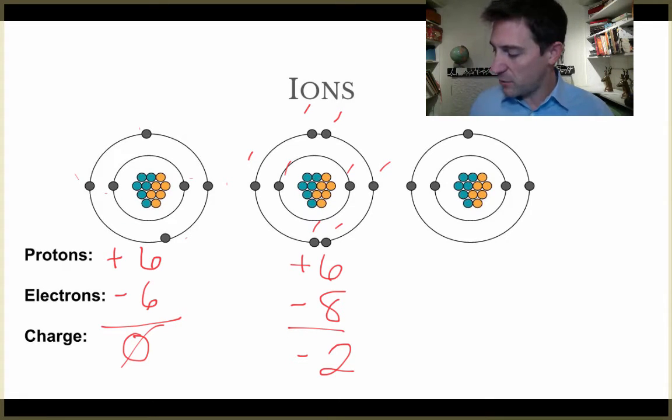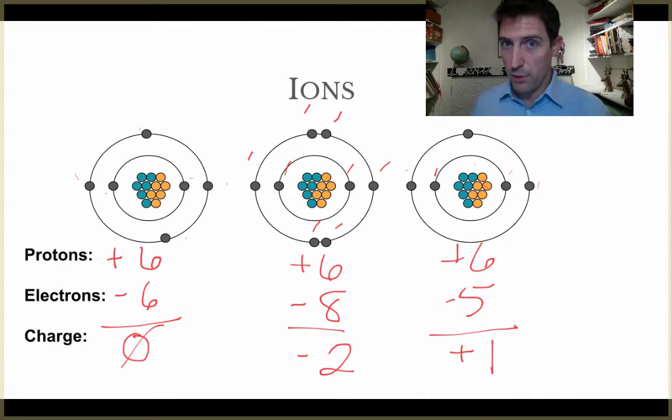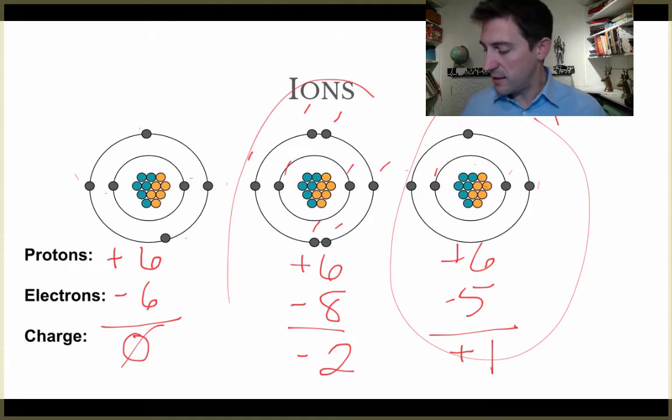I count up the next one, I've got one two three four five six protons and I've got one two three four five negative parts, which means I have an overall plus one or one plus as we would write it later on, a one plus charge. This is a cation and this is an anion because of the negative charge.